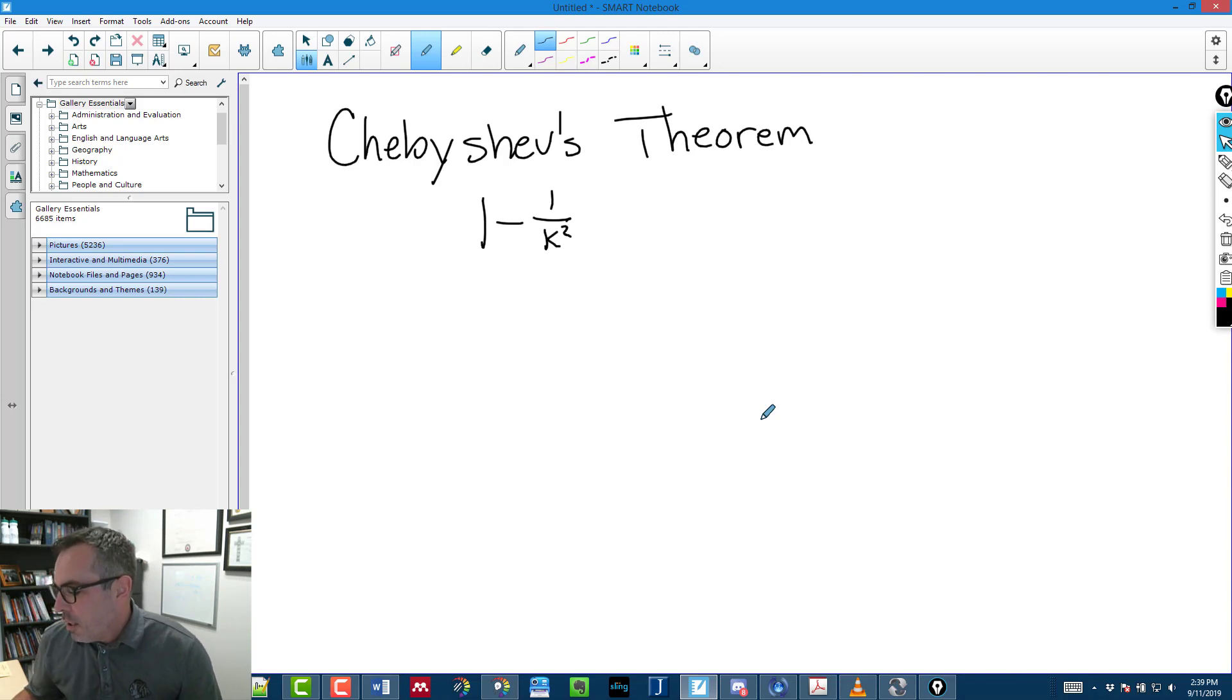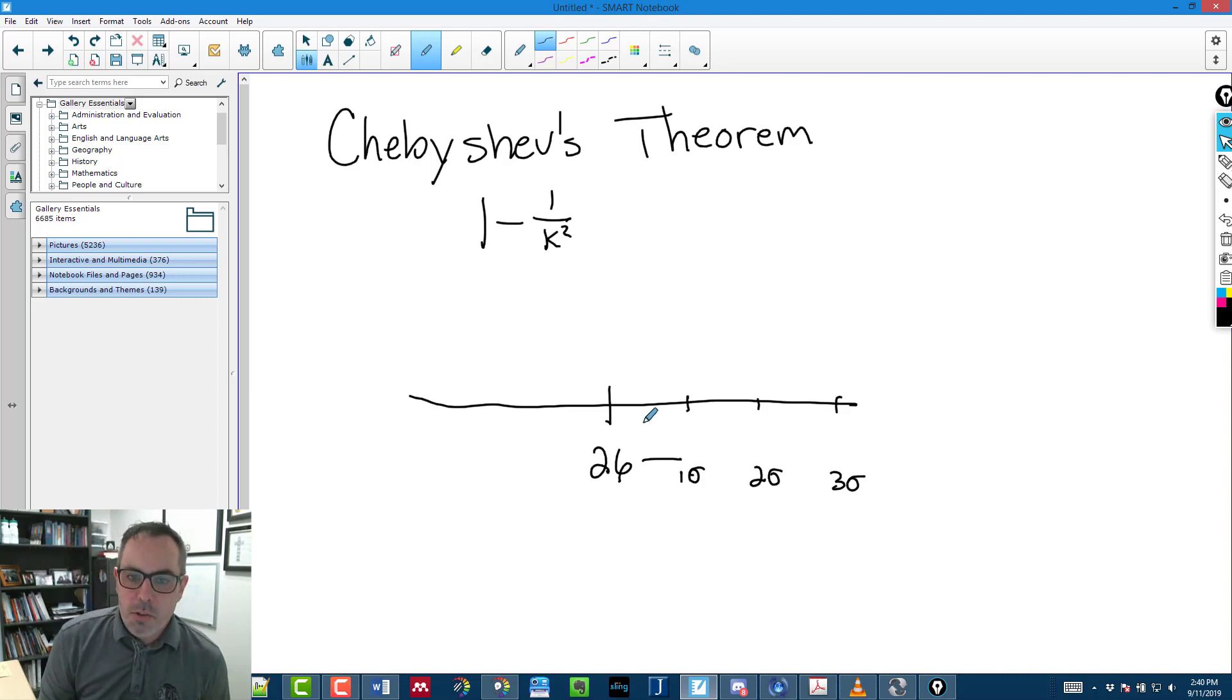So let's take a look at an example that says, on average, the score on a pre-employment test is a 26 with a standard deviation of 7. If I'm thinking about this, I don't know what this distribution looks like. I know that the average score is 26, and that each standard deviation, one standard deviation, two standard deviations, and three standard deviations are all 7.